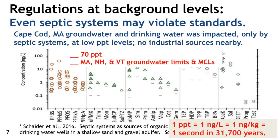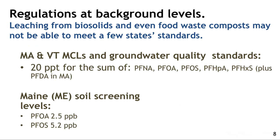An important thing to note is that a part per trillion is a very small amount — one second in 31,700 years — and can be written as one nanogram per liter or one nanogram per kilogram. Noting background levels, when we look at biosolids — which all contain PFAS, as does septage — these traces of chemicals come from our daily living environments and products. So every wastewater has measurable PFAS. The leaching from use of that wastewater, biosolids, or even food waste compost may not be able to meet some state standards in terms of leaching reaching groundwater at the 20 parts per trillion or lower levels.